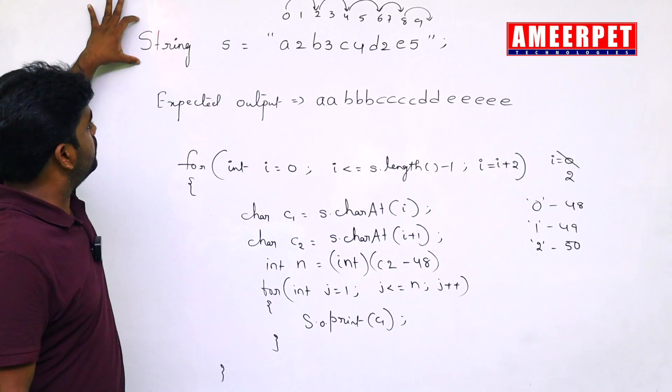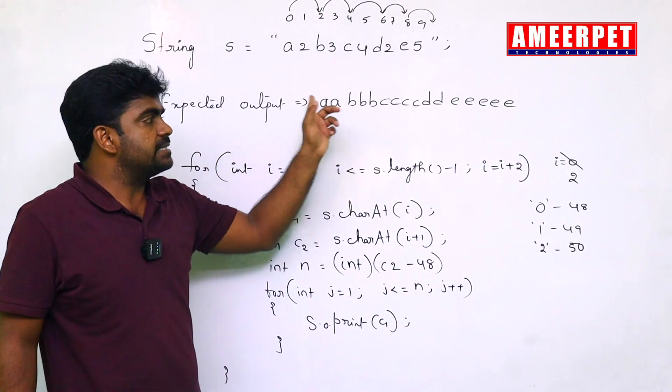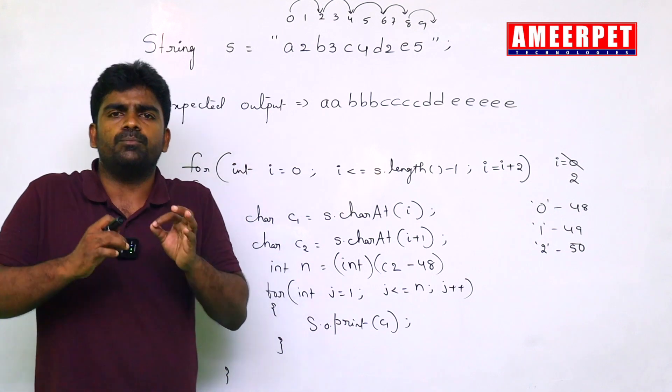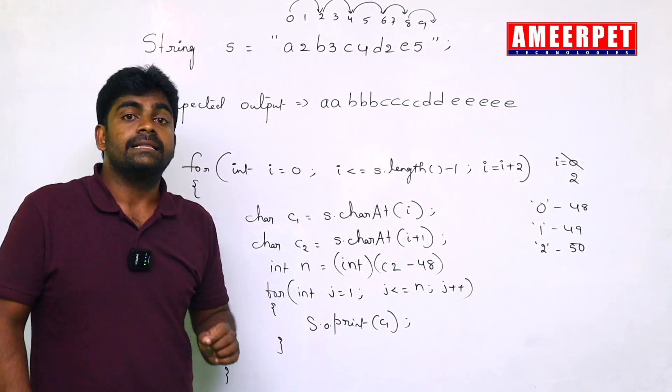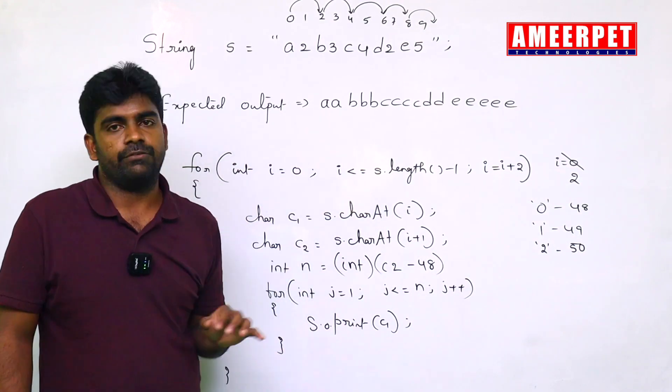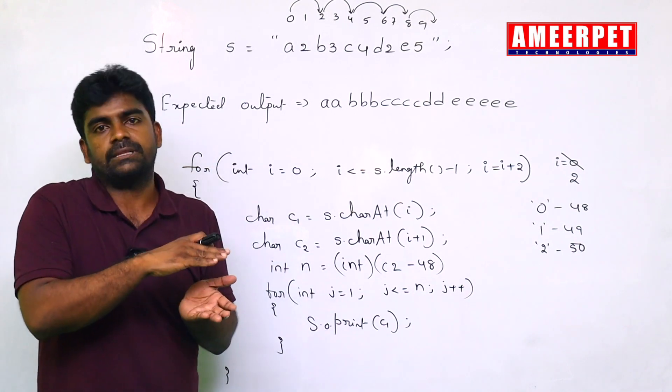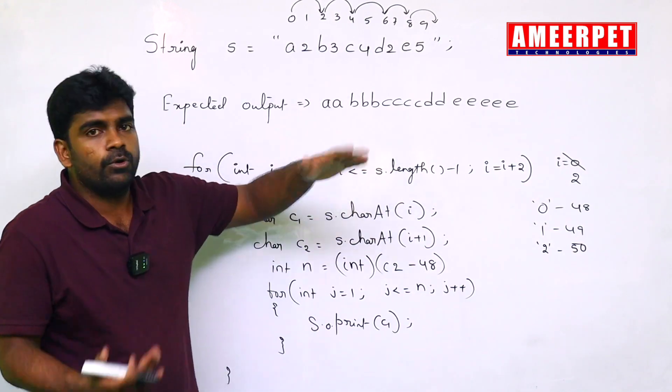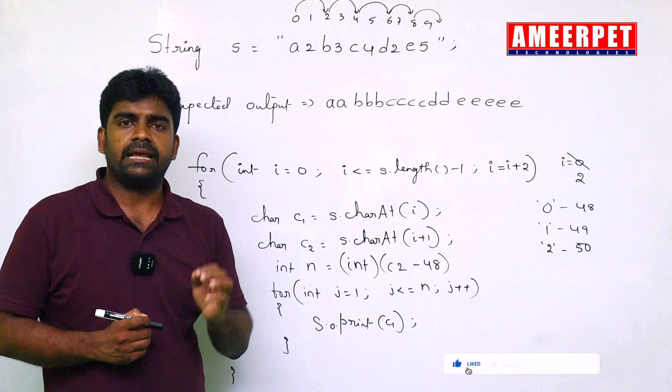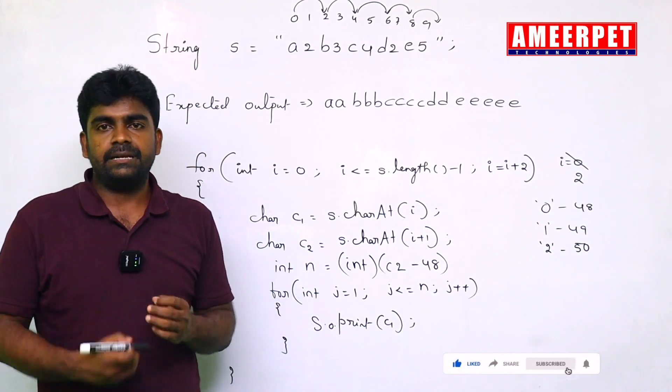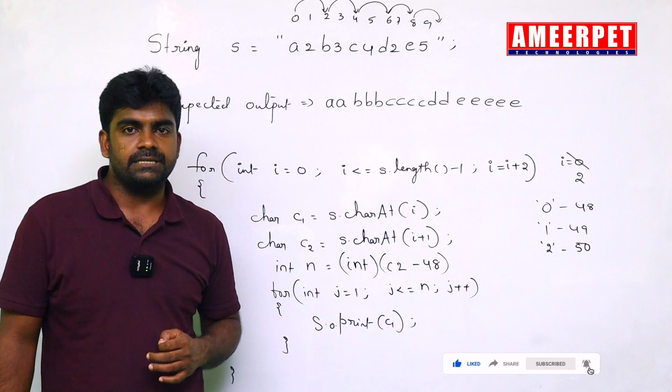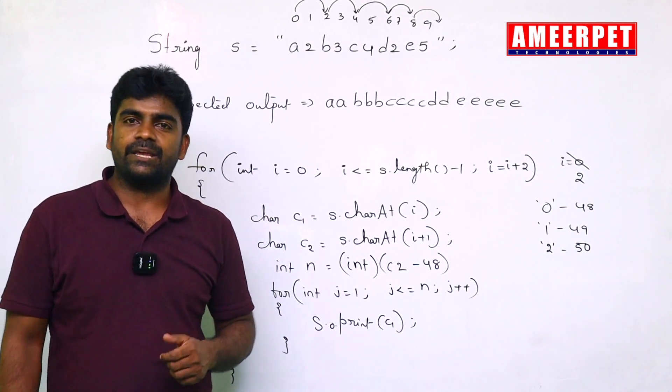Hope you understood. This is the input string and this is the expected output string. In most of the interviews, they are expecting these kind of things. And reverse things also they are asking. And some more examples like this they are expecting. Every single example I will explain. Please follow this video series. Hope you understood guys. Thank you all.